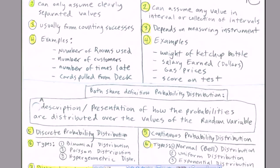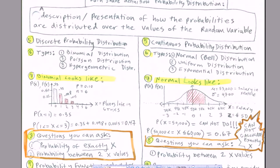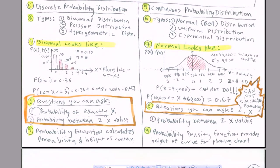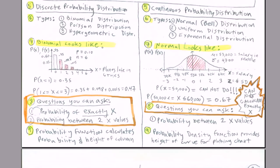Now each one of the discrete and continuous random variables share the definition of a probability distribution. That's a description or presentation of how the probabilities are distributed across the values of the random variable. Last chapter, it was discrete random variable. This chapter, it's continuous. Now we want to really strongly differentiate between how we did things last chapter with discrete probability distribution and how we're going to do it with continuous, because there's a huge difference.